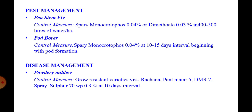Disease management: powdery mildew is a major disease, which can be controlled as a preventive measure by cultivating resistant varieties, namely Rachna, Panth Matar, Phayu, and BMR 7. If incidence occurs, then spray sulfur 75 WP or 70 WP at 0.3% at 10-day intervals.